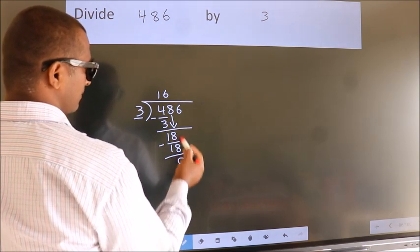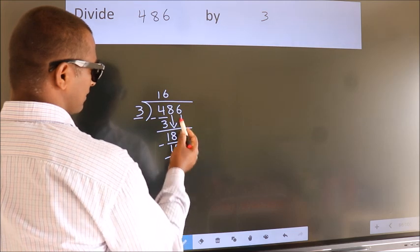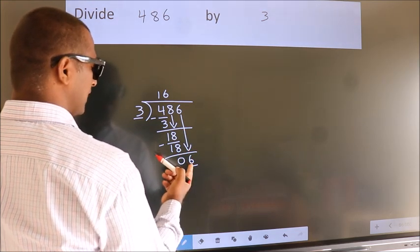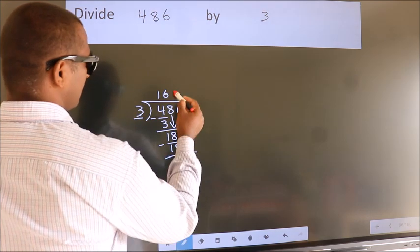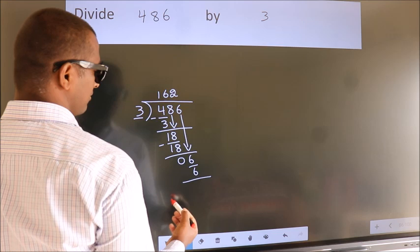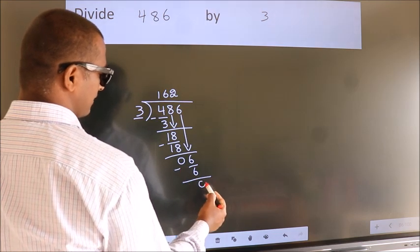After this bring down the beside number. So 6 down. So 6. When do we get 6 in 3 table? 3, 2's, 6. Now we subtract. We get 0.